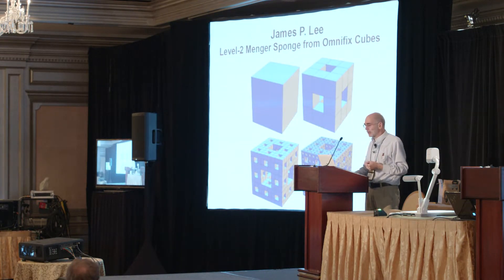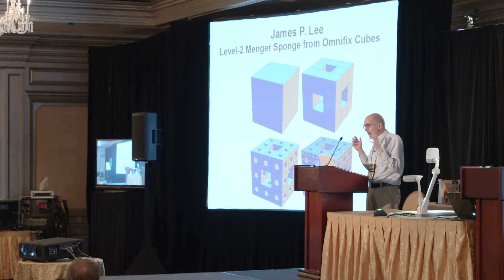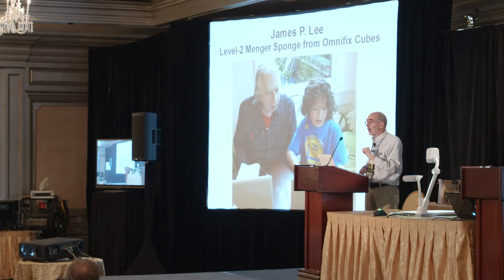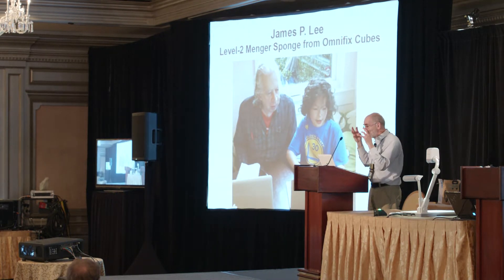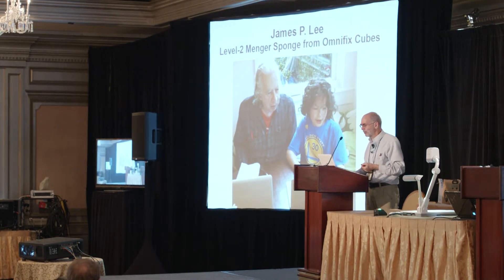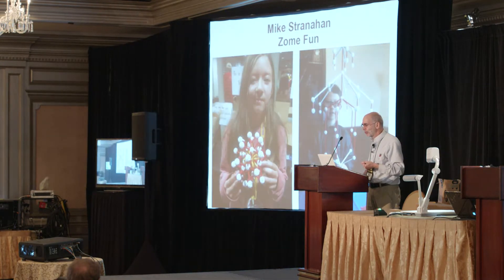James Lee is here for his first time and wanted to make a Menger sponge out of what are called Omnifix cubes — plastic toy cubes. James is in the back of the room. You can find him, learn how to put these cubes together — I think you build them flat first — and say hi and welcome James to his first G4G.